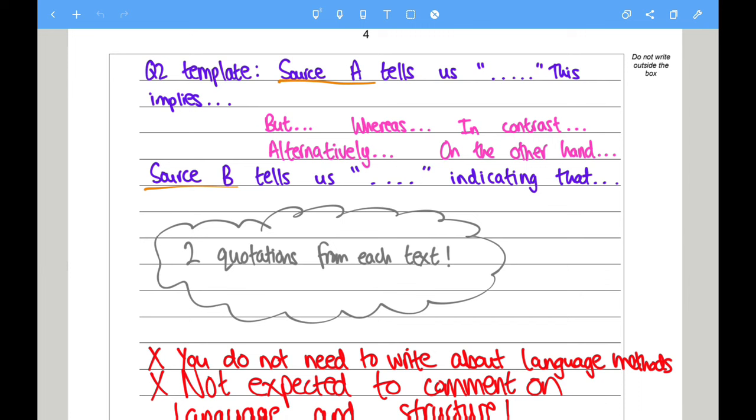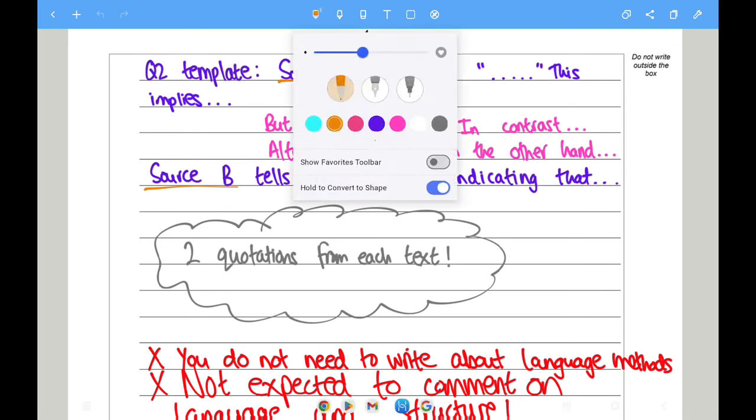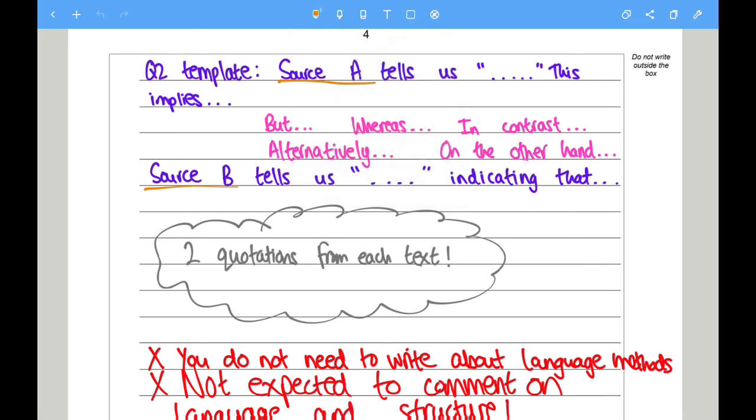Source B tells us... indicating that... So you tell us what the difference is between the two sources. And preferably, as I've written here, you should try to look for at least, I would say, maybe at least two quotations from each text. So two for Source A and two for Source B.